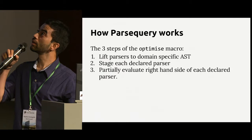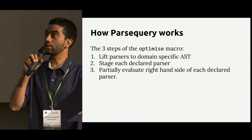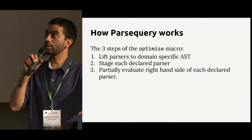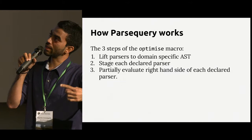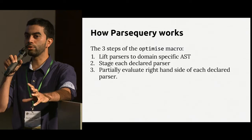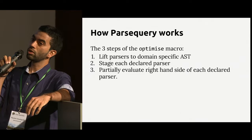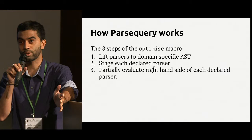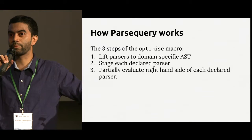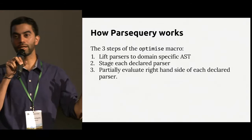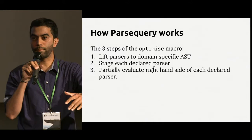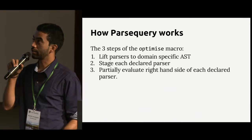We got such good results for performance with parse query because we are able to systematically eliminate all intermediate data structures. We do this with a macro, but actually we use theory — something called multi-stage programming. We need to do three things: first lift the user-level parsers to the domain-specific AST, then stage each declared parser — the critical part — and finally partially evaluate them, which completely eliminates all intermediate data structures. Then we run the parser.